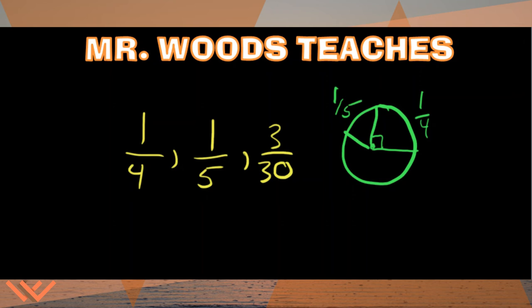But how would you look at three thirtieths? Well, both of them are three in it, so I bet you we can reduce that to one over ten. Because three times one is three, and three times ten is thirty. So we have one tenth. That'd be ten pieces around, so that would probably be half the size of the one fifth. So I'm going to draw that here, and I'm going to call that one tenth.